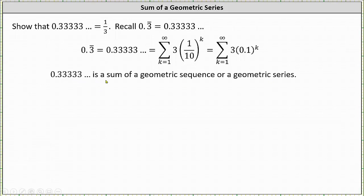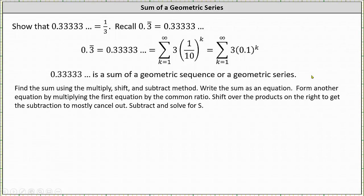0.3 repeating is a sum of a geometric sequence, or we can say a geometric series. So because we have a sum of a geometric sequence, we will now determine the sum using the method of multiply, shift, and subtract.